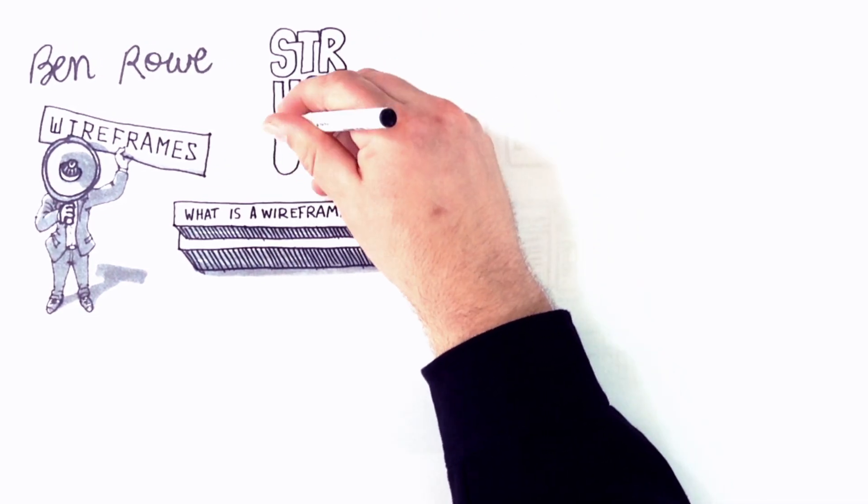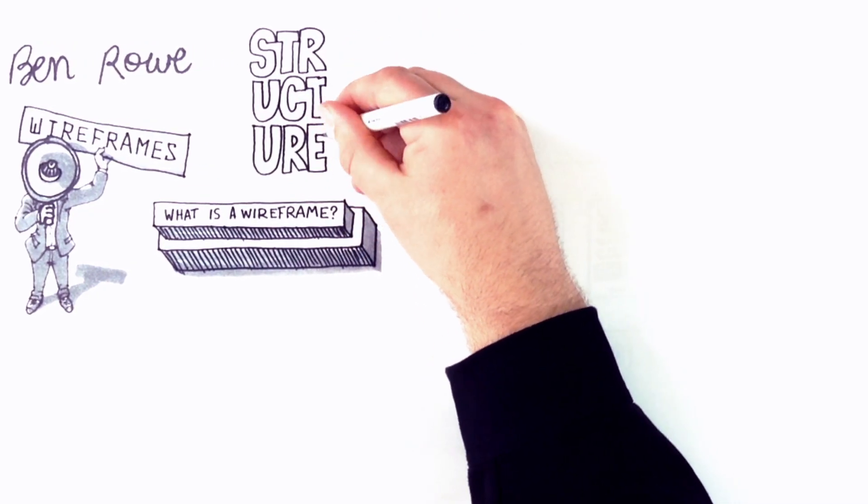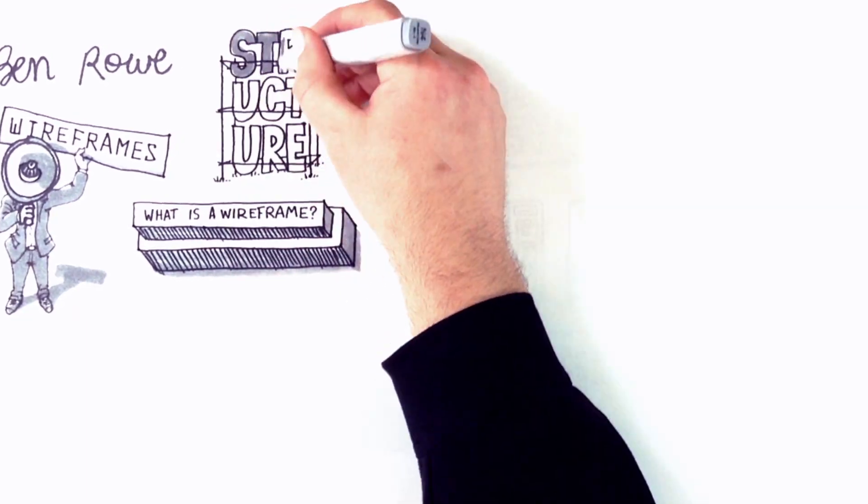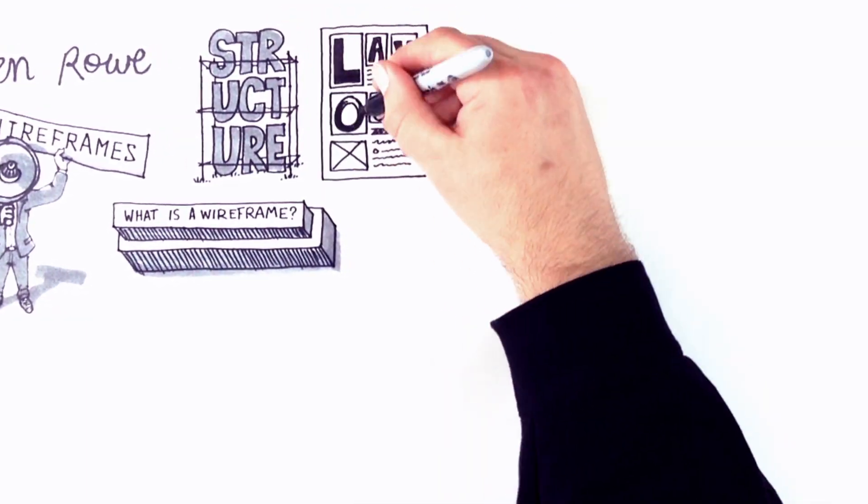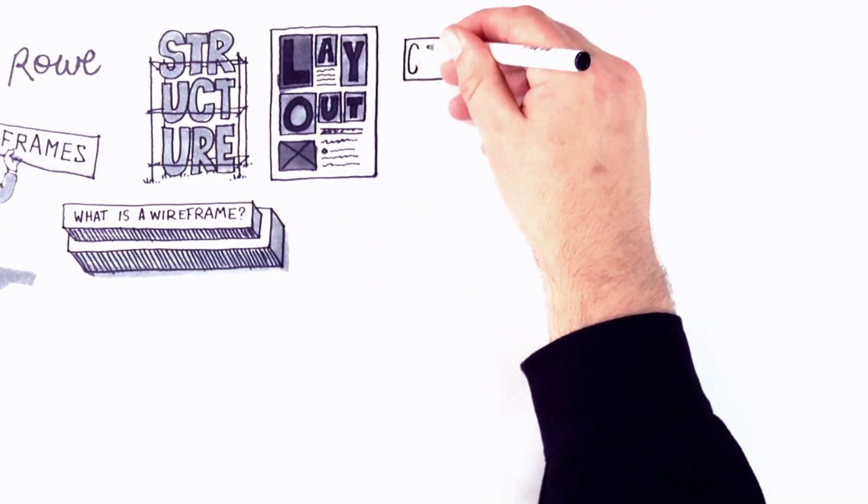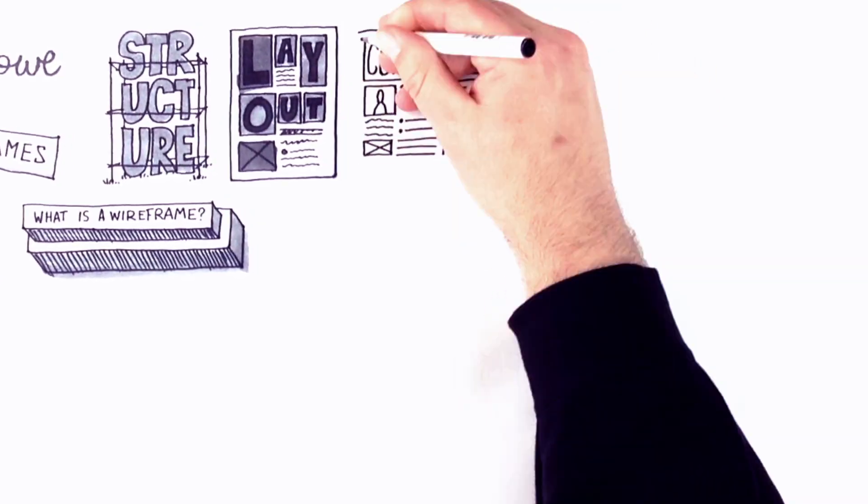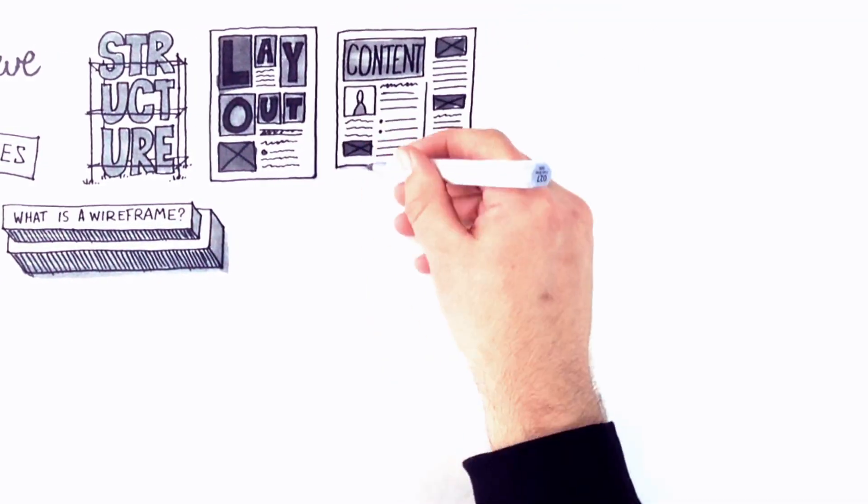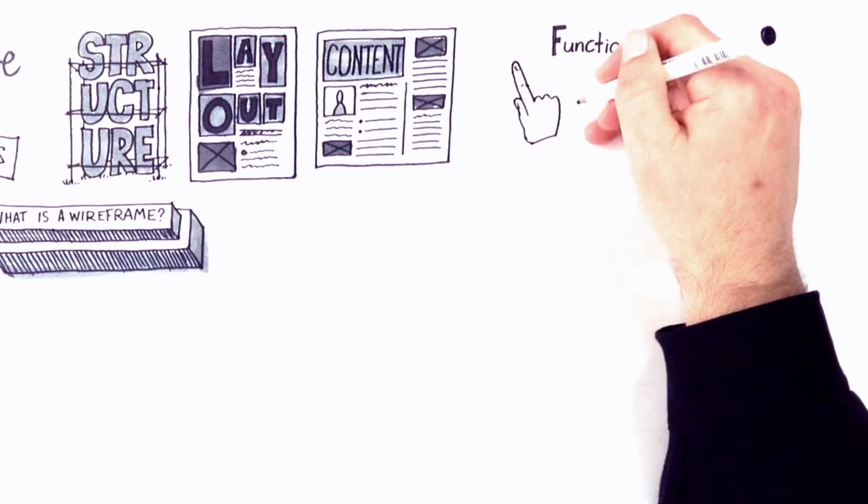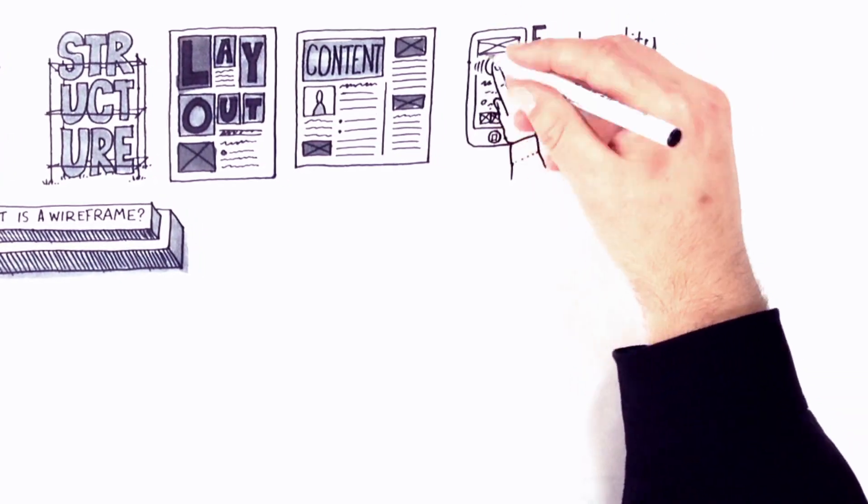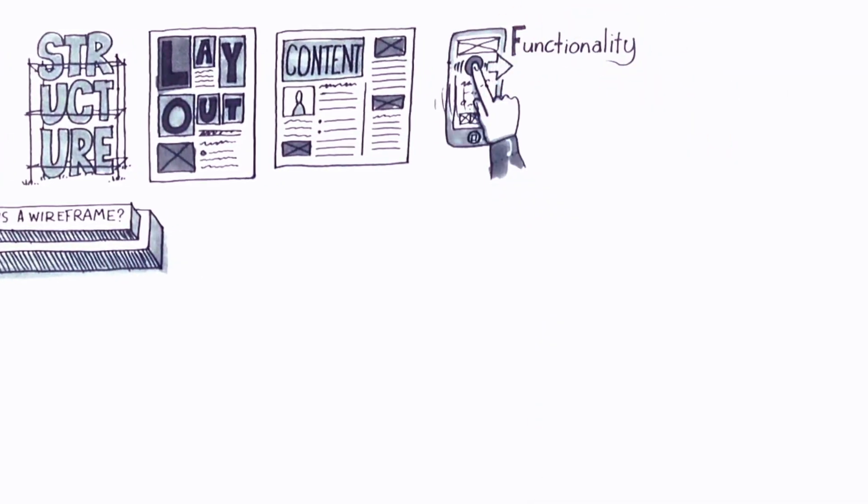You can use wireframes to communicate four things: the structure of your navigation and information architecture, the layout, including page hierarchy and the placement of elements on the screen, the content - wireframes give content writers an idea of how their content will be placed within the design, and the functionality - wireframes can describe how your product will work and how it interacts with the people using it.